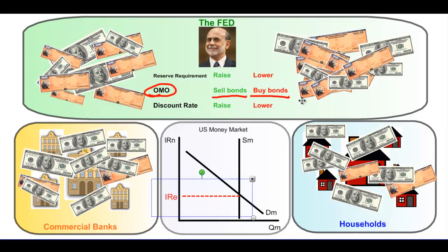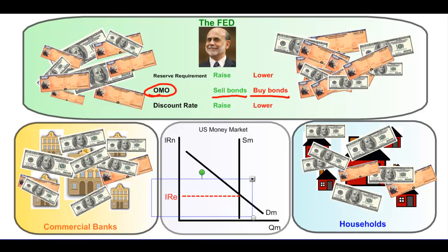Households will be able to borrow money at cheaper costs and will have more liquid money at their disposal, so they will spend more. Buying bonds is considered an expansionary monetary policy. When the Fed engages in an open market purchase of government bonds, it leads to an increase in the money supply, a decrease in the interest rate, and ultimately an increase in aggregate demand. What if the central bank wanted to contract aggregate demand — reduce the money supply, cause interest rates to rise, and lead to less aggregate demand?